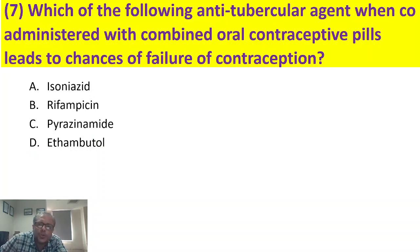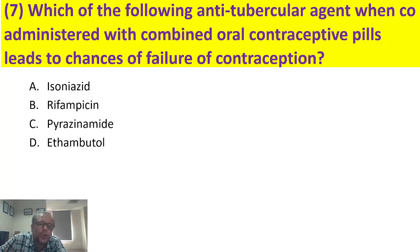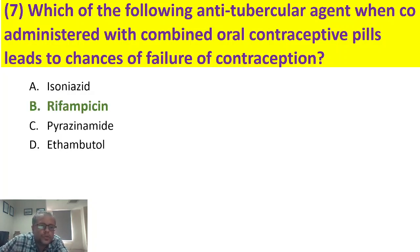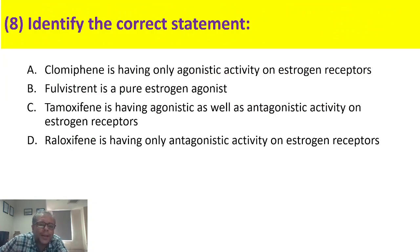Which anti-tubercular agent, when co-administered with combined oral contraceptive pills, leads to failure of contraception? Combined oral contraceptive pills have efficacy of more than 99%, but when given alongside a microsomal enzyme inducer, that drug induces metabolism of the OC pills leading to contraceptive failure. The answer is rifampicin. In a patient already taking OC pills who develops tuberculosis, you need to increase the dose of the oral contraceptive pills. The answer is B, rifampicin.